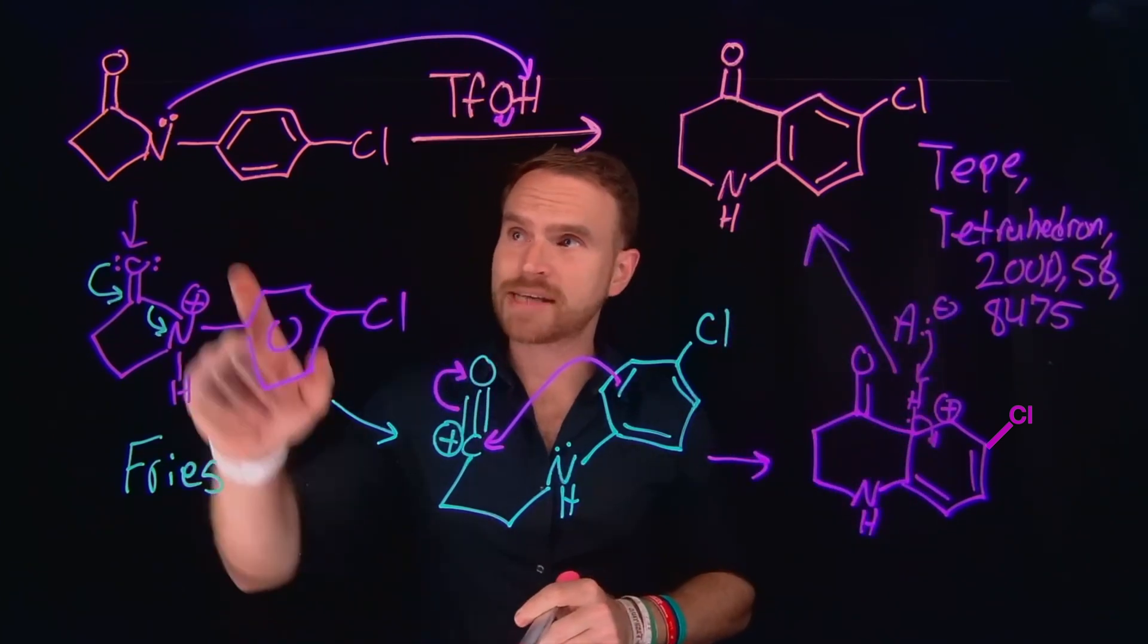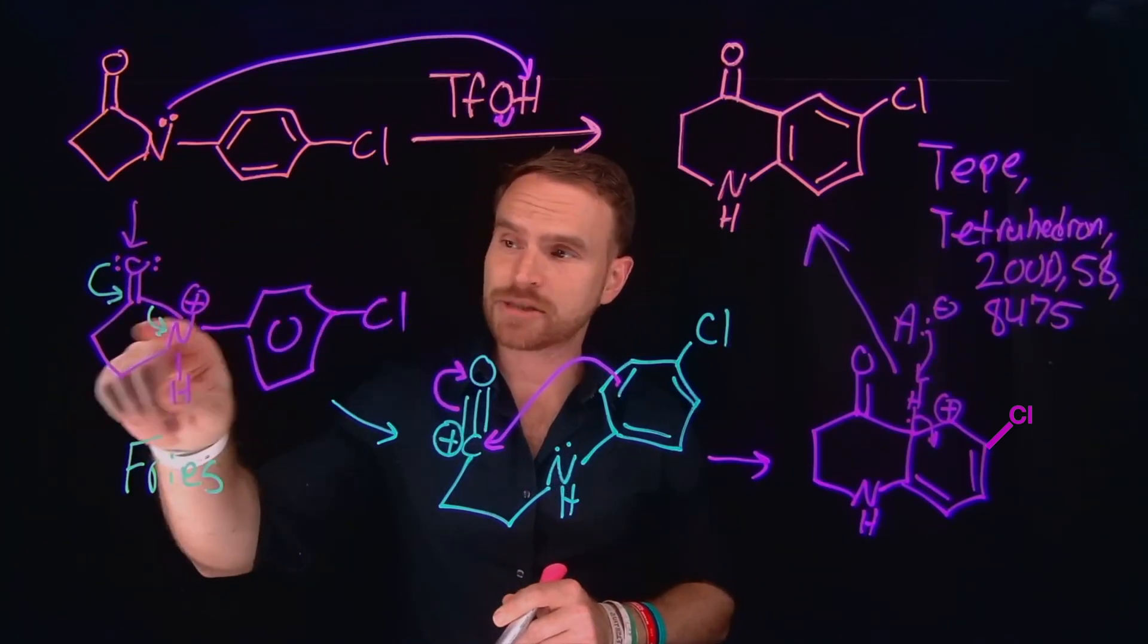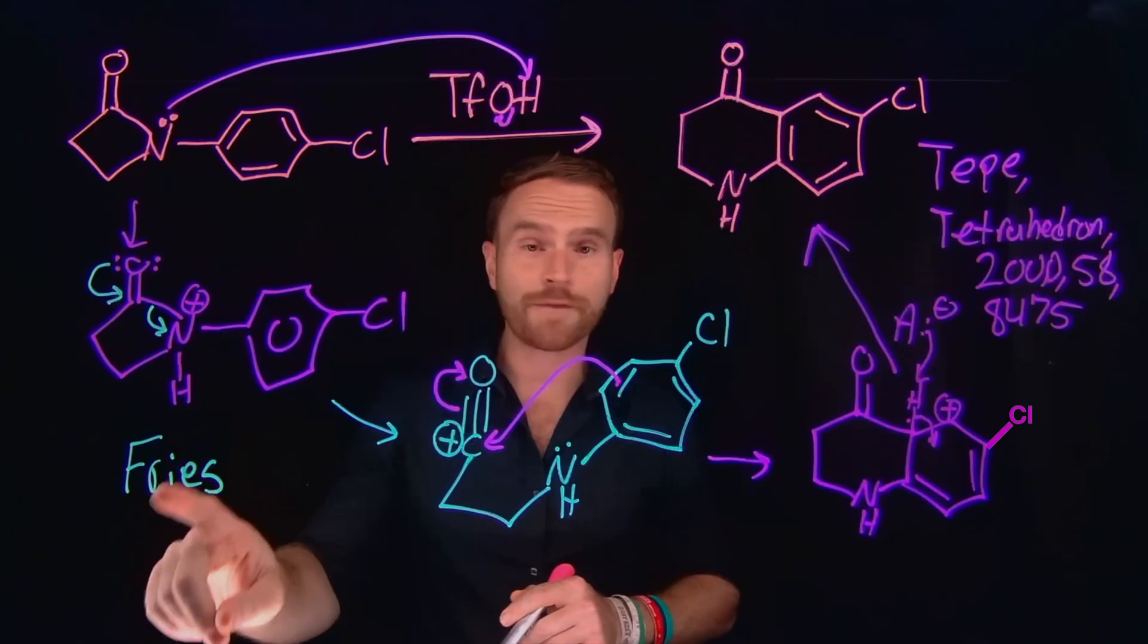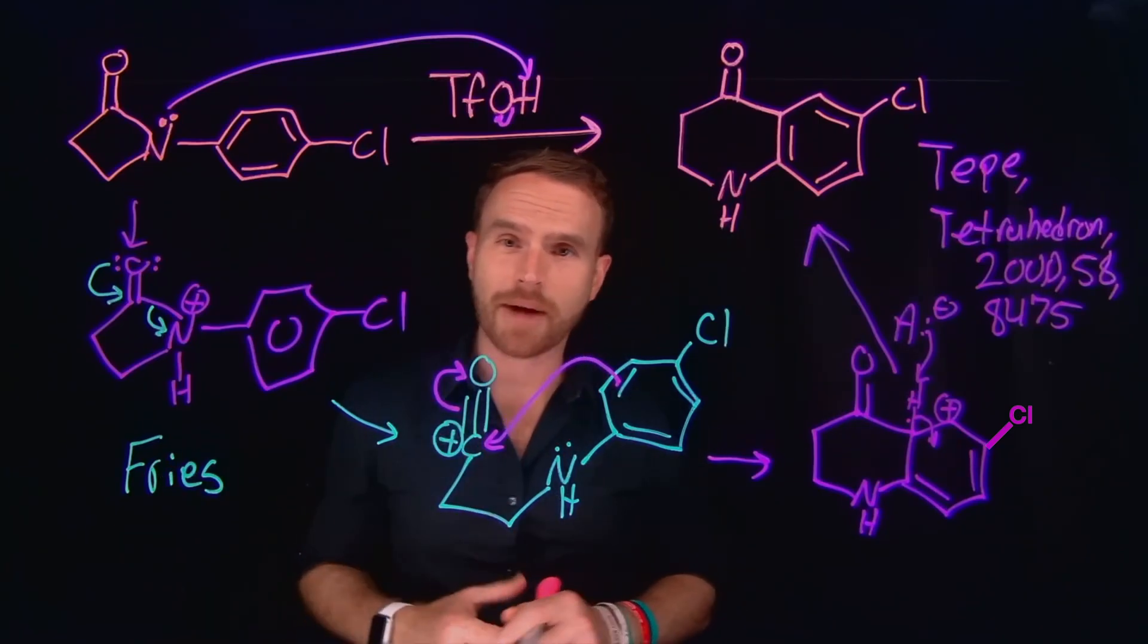So to recap, what's happening is that this beta-lactam gets protonated by a strong acid. This is going to allow this beta-lactam to undergo a Fries type of rearrangement, where you generate a highly activated electrophile in this carbonium ion.